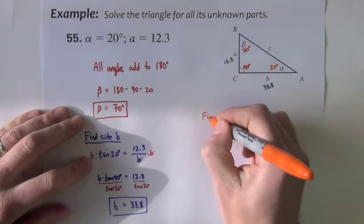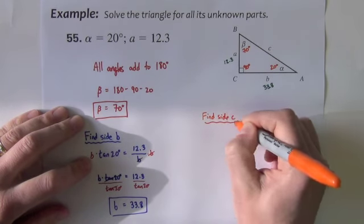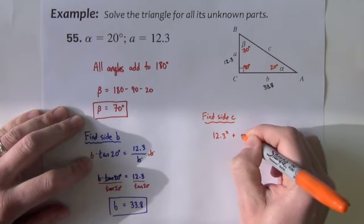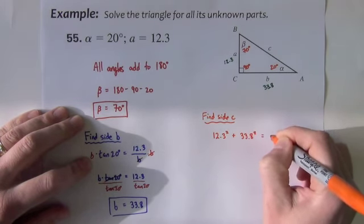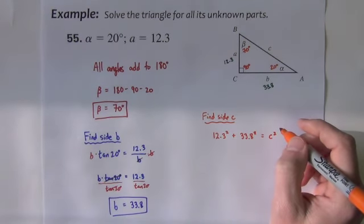I'm going to define C with Pythagorean's theorem. 12.3 squared plus 33.8 squared equals C squared. And I'm going to let the calculator help me out a little bit.